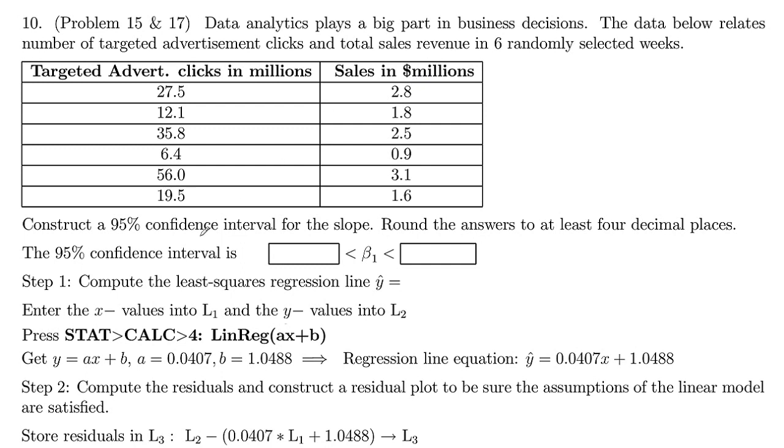So what they want us to do is construct a 95% confidence interval for the slope, and we're going to round our answers here to four decimal places. So we're going to go ahead and fill in our confidence interval. Step one: compute the least squares regression line.